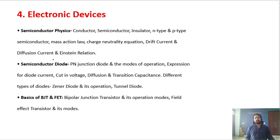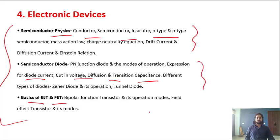Next is Electronic Devices. Three topics are covered: Semiconductor Physics, Semiconductor Diode, and basics of BJT and FET. In Semiconductor Physics, conductor, semiconductor, insulator, N-type and P-type semiconductor are covered. In Semiconductor Diode: PN junction modes of operation, expression for diode current, cutting voltage, diffusion and transition capacitance. Last is basics of BJT and FET, that is bipolar junction transistor and its operation modes (forward bias mode, reverse bias mode, forward conduction, etc.), and field effect transistor and its modes.